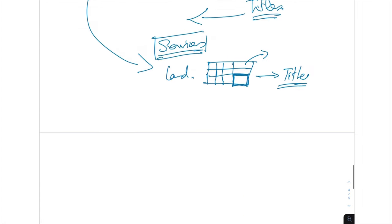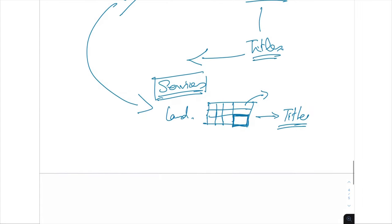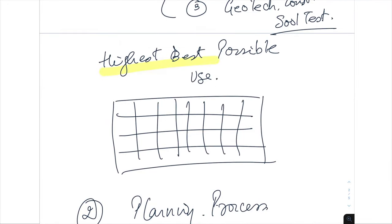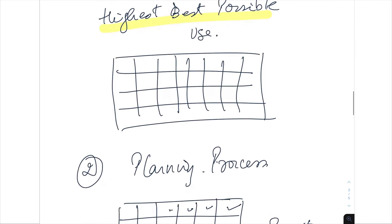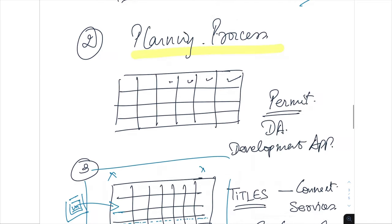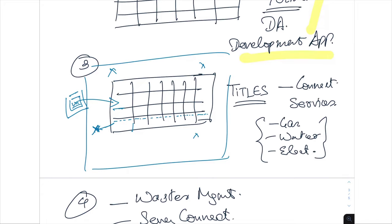So in a nutshell, this is your process. The first thing is to figure out the highest, best possible use for the site — the maximum number of blocks — which increases your return. Then you go through the planning process, which gives you your permit and your DA, your development approval.